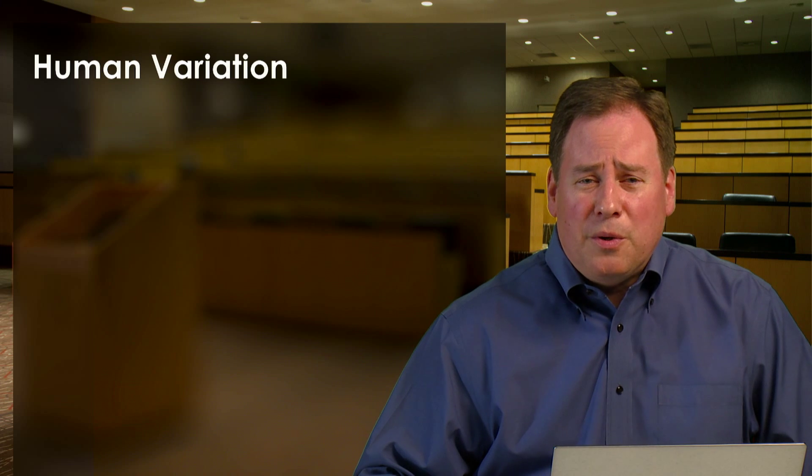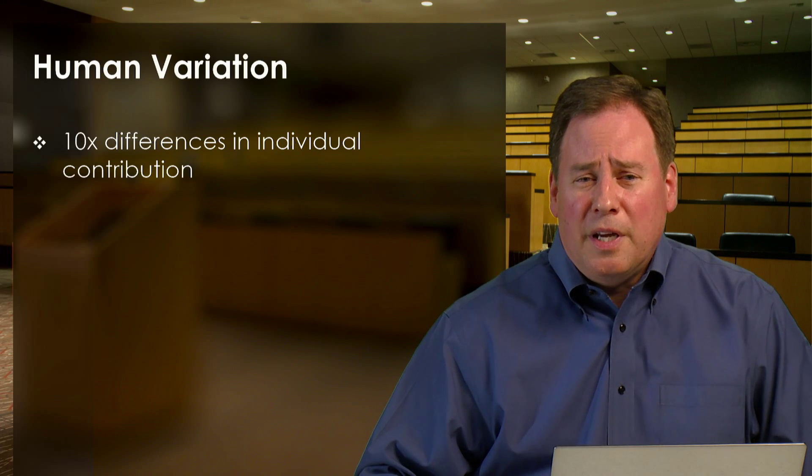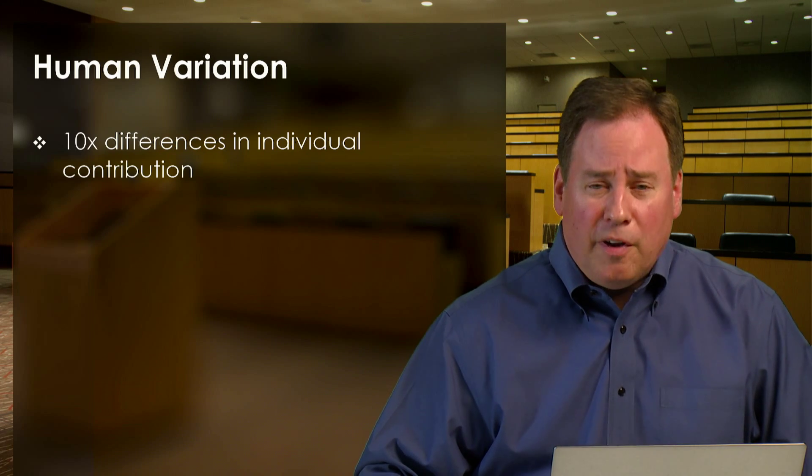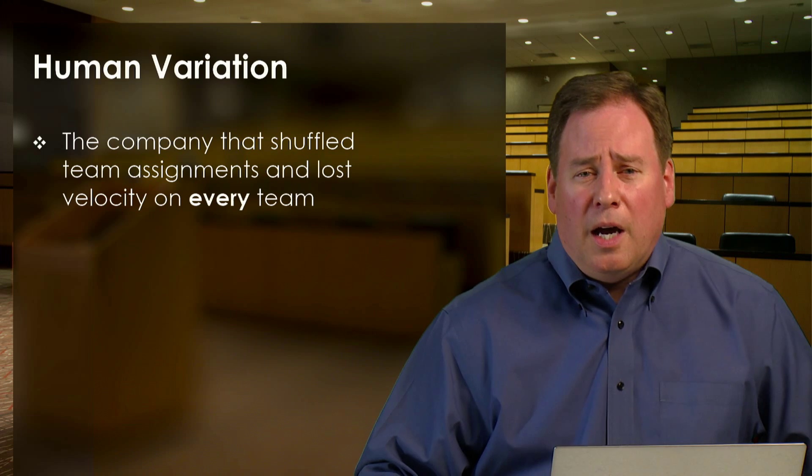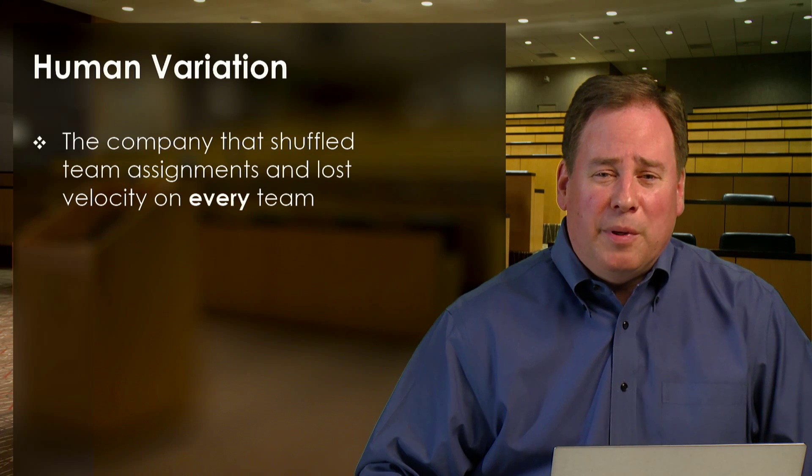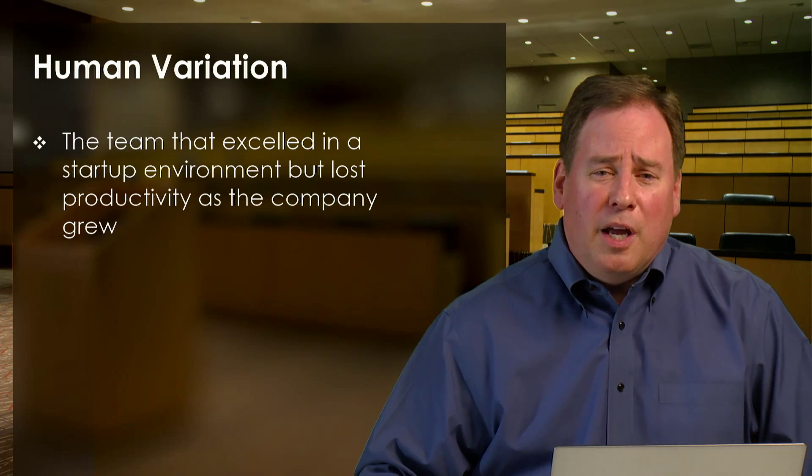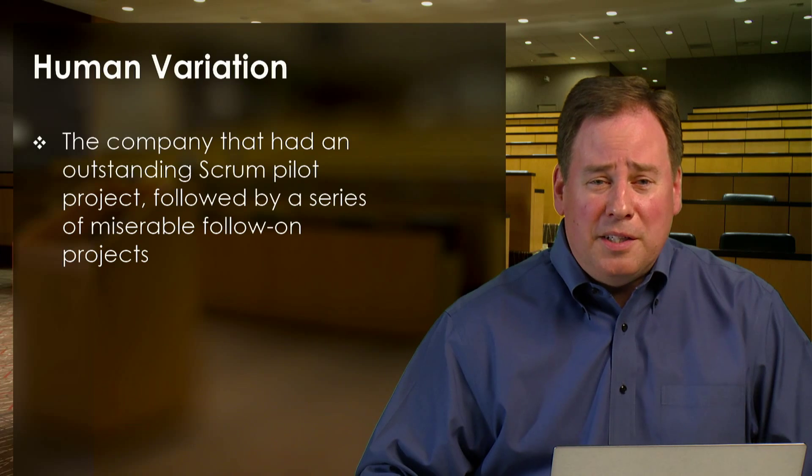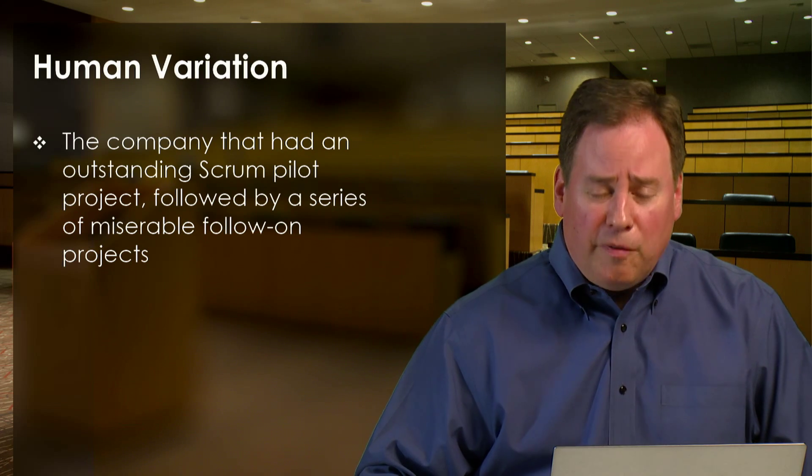In the human variation category, we'll see stories as well. In this category, we'll see an explanation of how there are 10x differences or 10-fold differences in individual contributions, and that's in productivity, quality, debugging effectiveness, and really every other aspect of software development. We'll also see how that 10x difference applies to team contribution, which research says that it does. We'll see a story of the company that shuffled team assignments with a goal of improving productivity, but that actually lost velocity on every single team. We'll see the story of the team that excelled in a startup environment, but as the company grew and matured, they actually lost productivity. We'll see the story of the company that had an outstanding Scrum pilot project that made them think that Scrum was really going to be a good solution for them, but then was followed by a series of miserable follow-on projects.